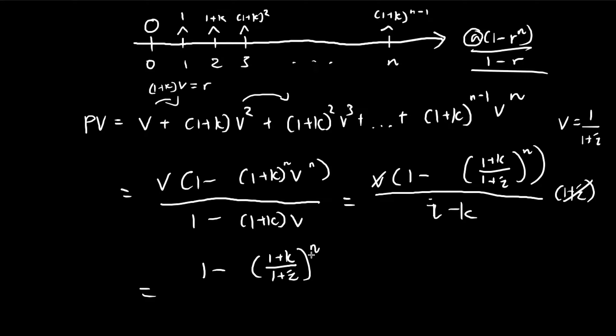If we have an annuity that pays n years, it's an annuity immediate with interest i and it's increasing by a factor of (1+k), this is the formula for the present value. I encourage you to memorize this because it will come in handy for your exams.